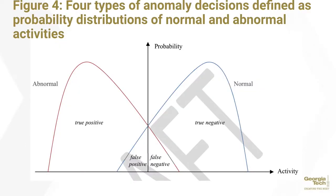There are four different types of anomaly decisions based on probability distributions of normal and abnormal activity. On the left is abnormal activity under the red curve and toward the right is normal activity, with the y-axis representing the probability of seeing that activity. True positives are intrusion activities truly declared as abnormal — that's what you want to see. True negatives are where normal user activities are declared as normal and IDS should not trigger an alert. False positives are where normal user activities are falsely declared as abnormal — a bad performance indicator since typical users are declared as intruders. False negatives are intrusion activities falsely declared as normal — a dangerous situation since intruders can look like normal users.